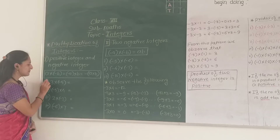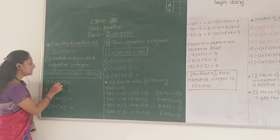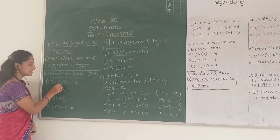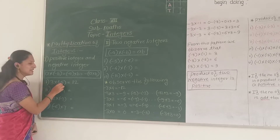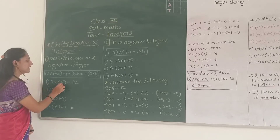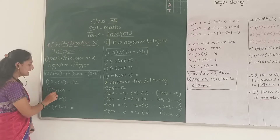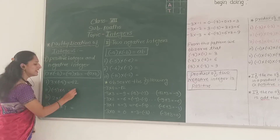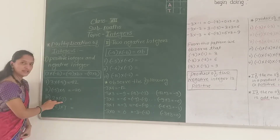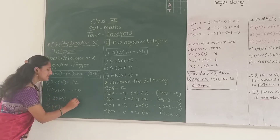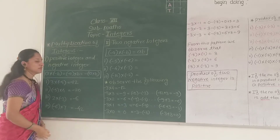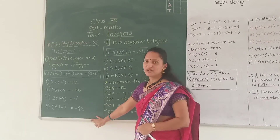Look at some examples. What will be 3 into negative 4? Now 3 into 4 is 12, but there is a negative sign. In multiplication, positive into negative is negative, so the answer is negative. Therefore, 3 into negative 4 is negative 12. Now, negative 5 into 4: one integer is positive, one is negative. Positive into negative is negative, so negative 5 into 4 is negative 20. And 2 into negative 3 is negative 6. Negative 6 into 7 is negative 42.